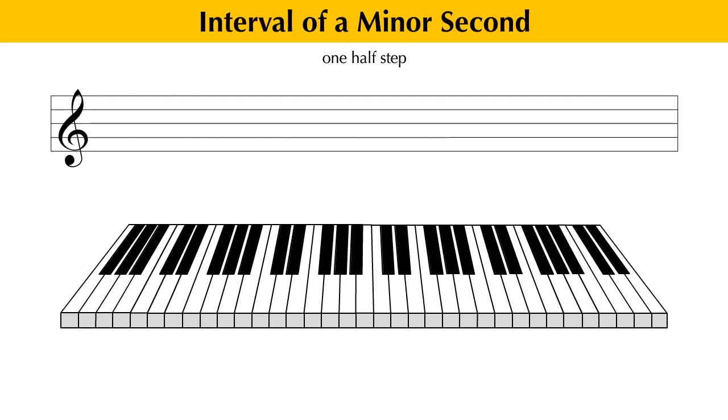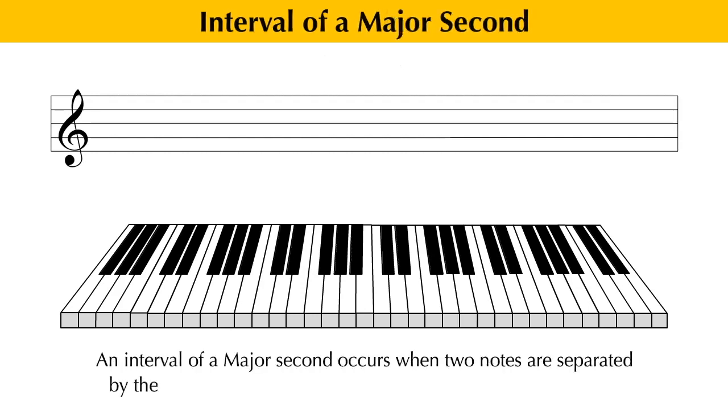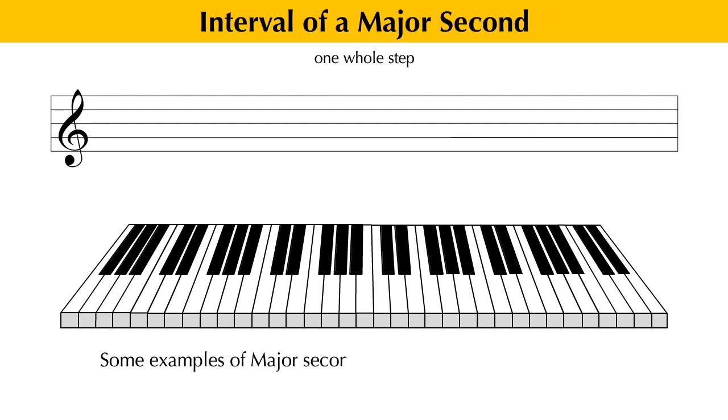On the other hand, an interval of a major second occurs when two notes are separated by the distance of two consecutive half steps, or one whole step. Some examples of major second intervals would include the notes F and G.